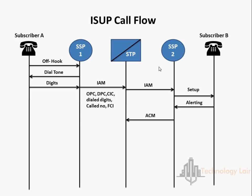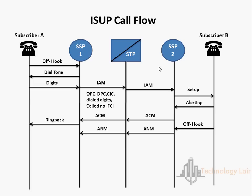The STP routes the ACM to the originating SSP, which connects the calling party line to the trunk to complete the voice circuit. The calling party hears the ring back tone. The called party goes off hook, the destination switch terminates the ringing tone and transmits the ANM, or ISEP answer message, to the originating SSP via the STP. The STP routes the ANM to the originating SSP, which verifies the calling party is connected to the reserved trunk.